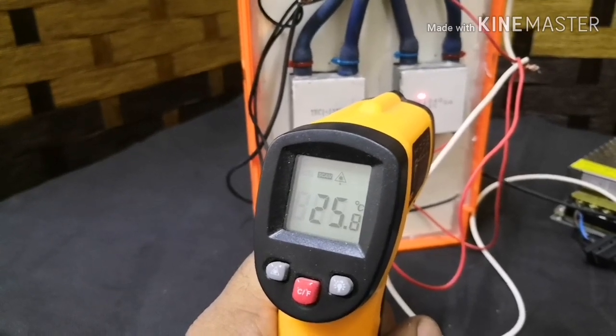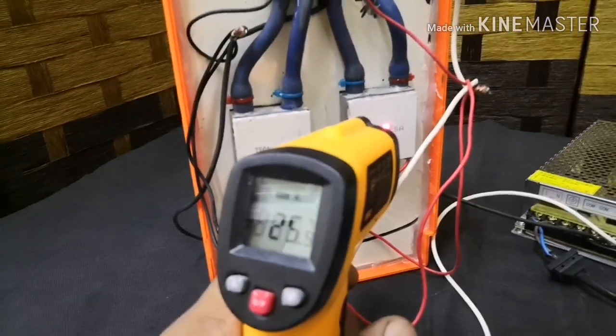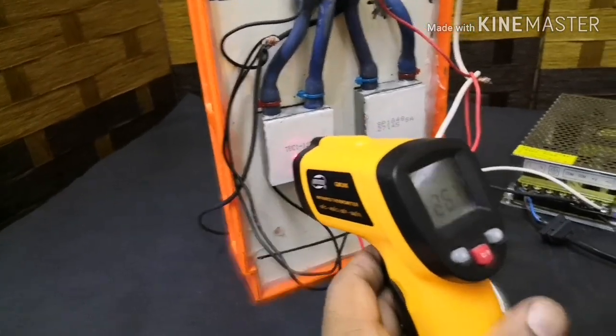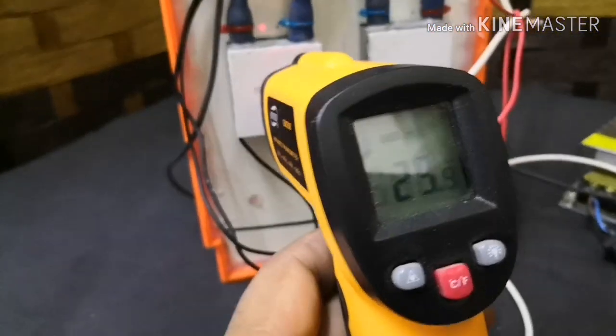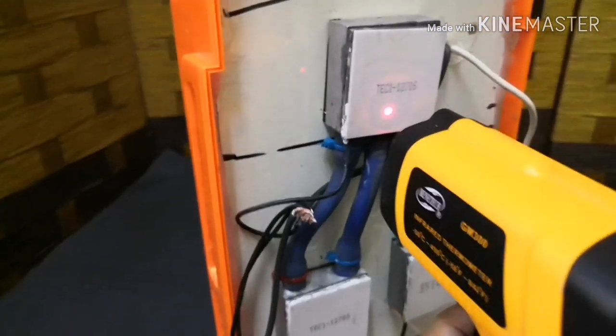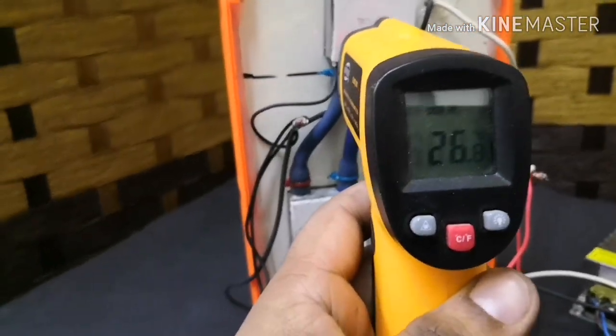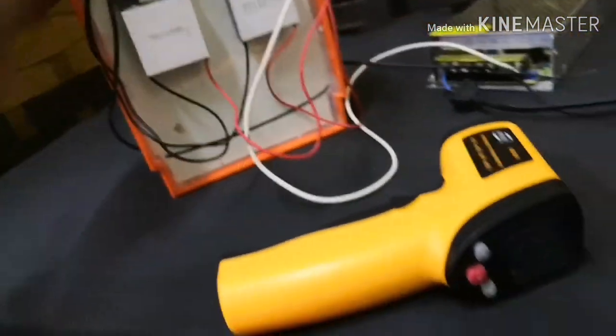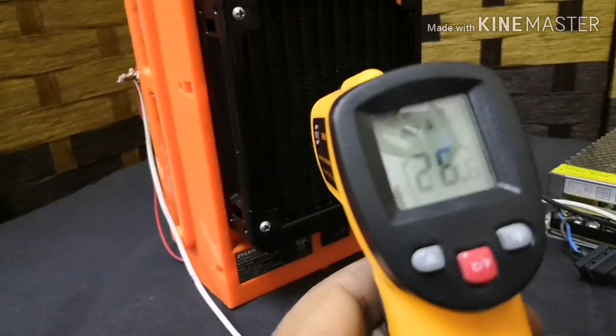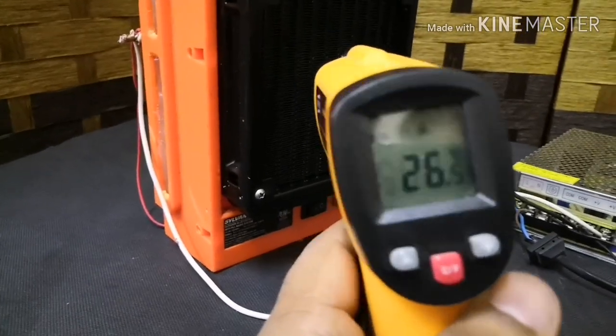As you can see, this Peltier is almost 26 degrees at the starting stage. This is also 26 degrees, and the top one, TEC 12705, is also 26 to 27 degrees almost.